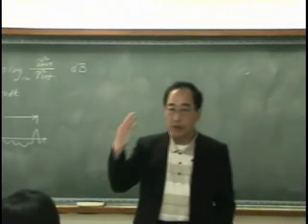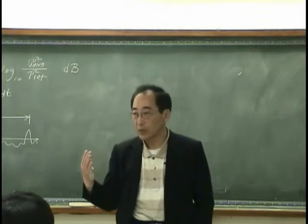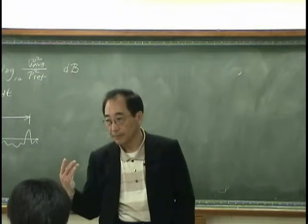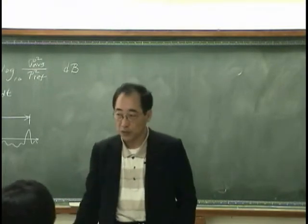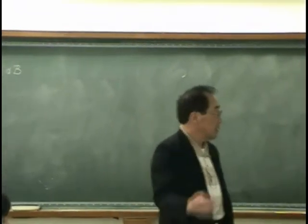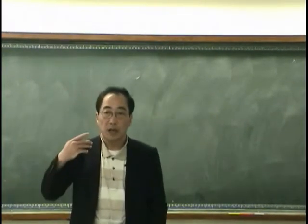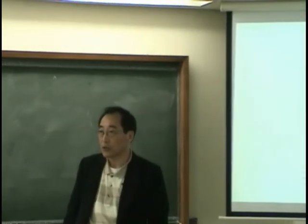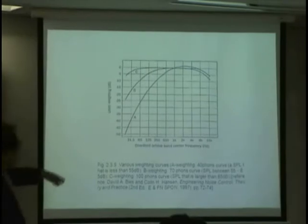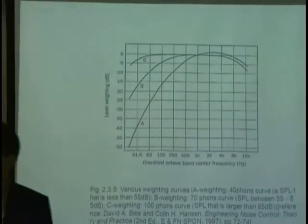To summarize: we now understand how to actually calculate or measure SPL — sound pressure level. We also understand that our auditory system is sensitive to frequency. Therefore, when we calculate SPL for noise, we have to take into account the dependency of our auditory system on frequency. We often use A, B, or C weighting to account for the auditory system's frequency dependency.